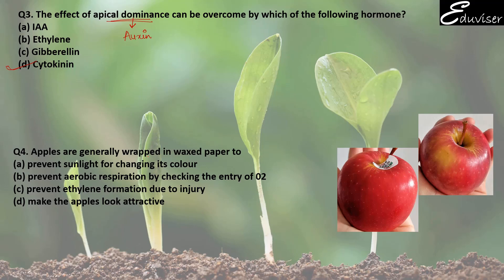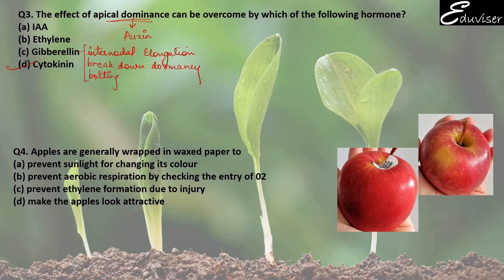Gibberellin causes internodal elongation. It also breaks down dormancy — both bud dormancy and seed dormancy. Gibberellic acid also causes bolting. These are all functions of gibberellic acid. Ethylene is a gaseous hormone. So the answer for question 3 is D — cytokinin.